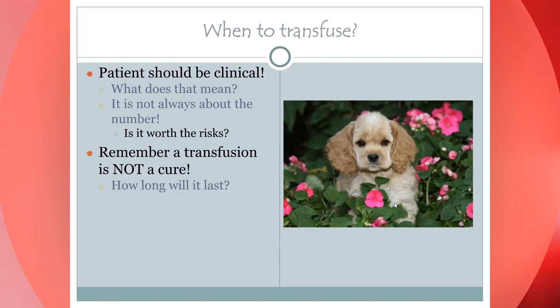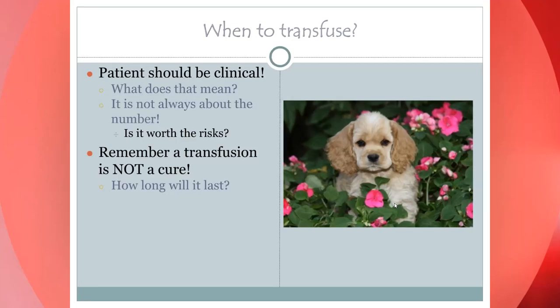What we give is called a xenotransfusion — dog blood to cats. The reason it works is that there are allo-antibodies and antigens specific to each species. If we gave a mismatched cat blood type to a cat, they'd have a reaction. But because we give dog blood, the cat's immune system doesn't recognize anything as a foreign invader, so there's little to no reaction.